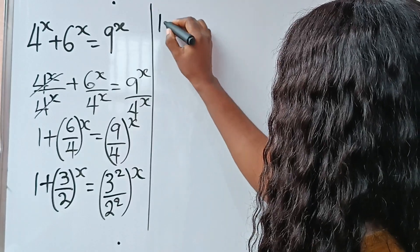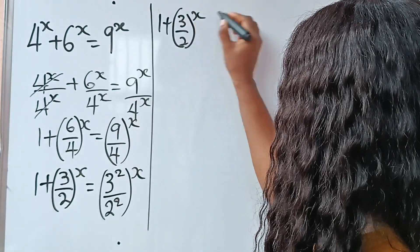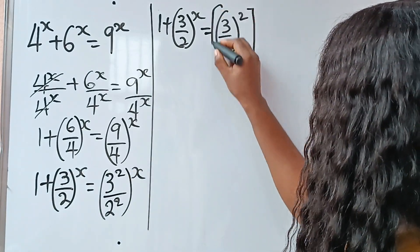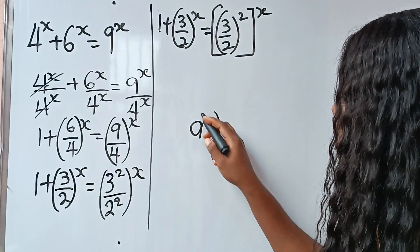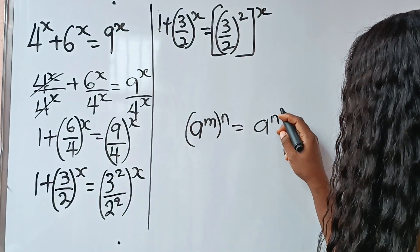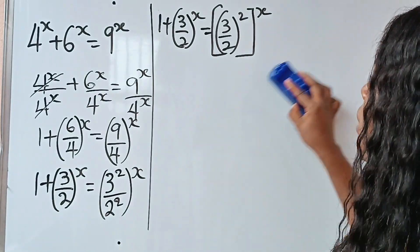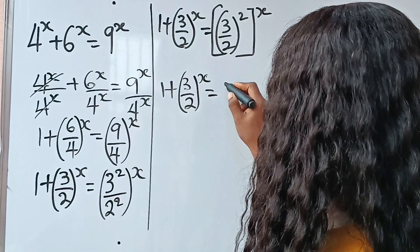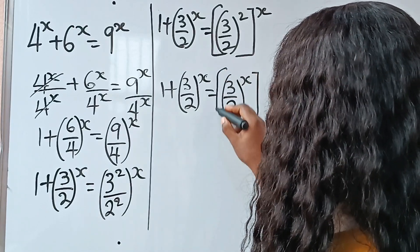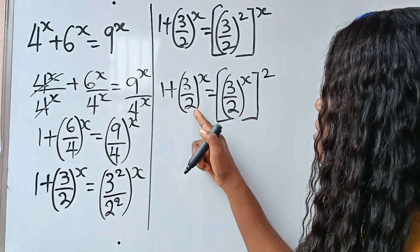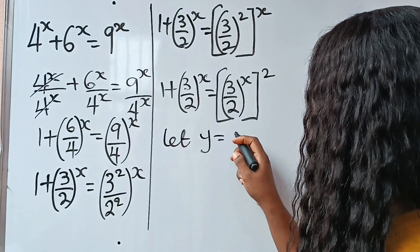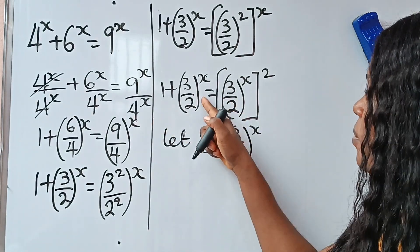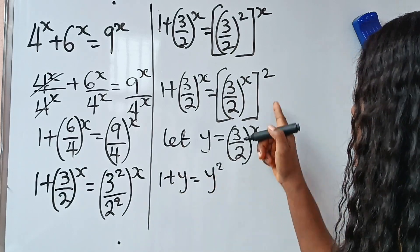We have 1 plus 3 over 2 to the power of x is equal to 3 over 2 squared, everything raised to the power of x. Now, when you have a to the power of m raised to the power of n, this can be written as a to the power of n raised to the power of m. So we can write this as 1 plus 3 over 2 to the power of x is equal to 3 over 2 to the power of x, everything squared. To simplify, since we have the same expression here and here, let y equal 3 over 2 to the power of x. We have 1 plus y is equal to y squared.